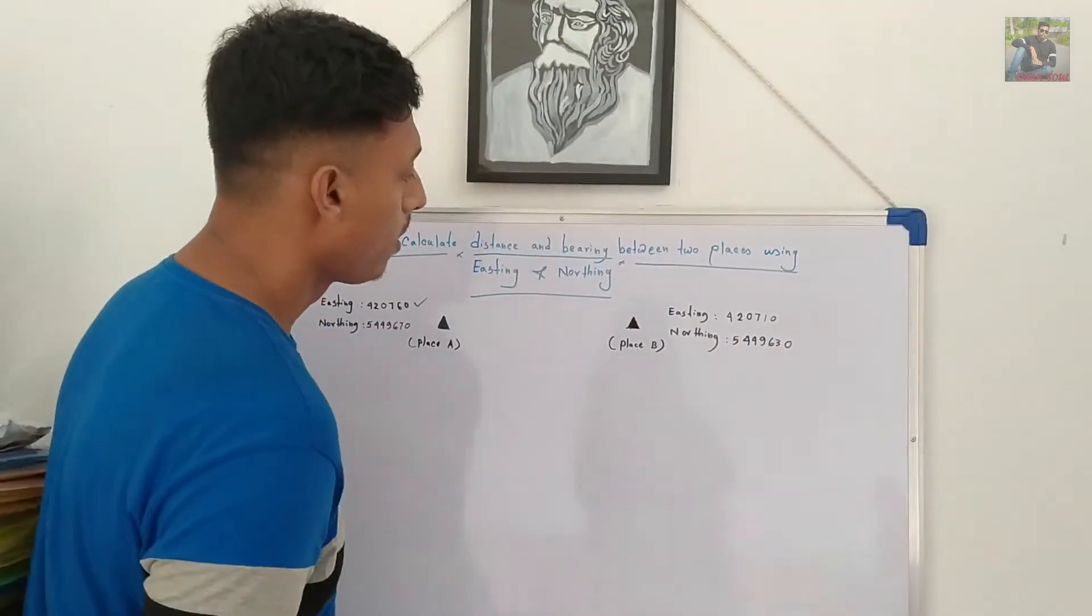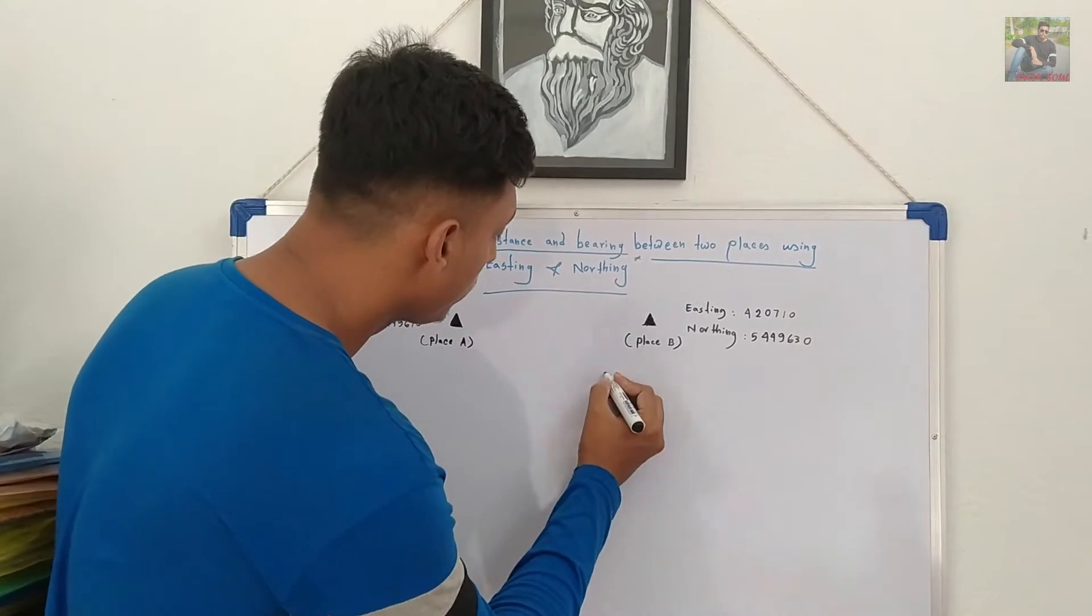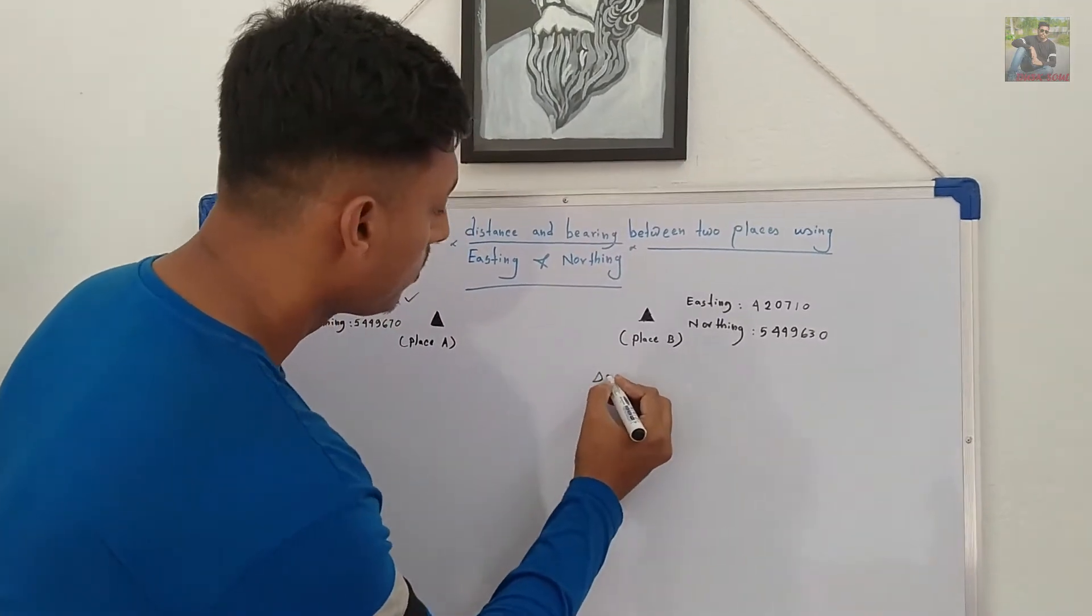Firstly, we have to compute the differences of easting, that is delta E, and differences of northing, that is delta N.